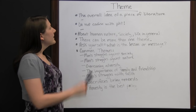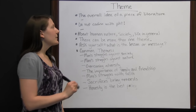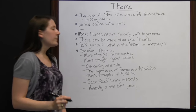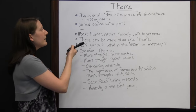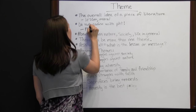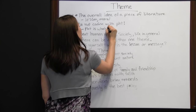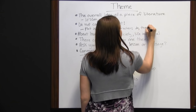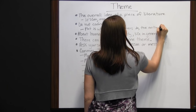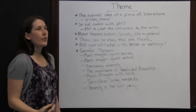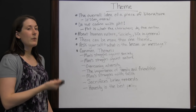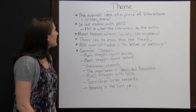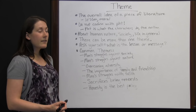Theme is the overall idea of a piece of literature. Think about the lesson or moral of the story that the author is trying to get across to you. Do not confuse theme with plot — plot is what the characters do, the action of the story. It does not have to do with the overall lesson or message the author is conveying. What the characters do helps you understand the theme, but plot and theme are not the same thing. Theme is more about human nature, society, and life in general.